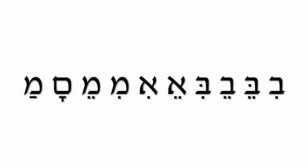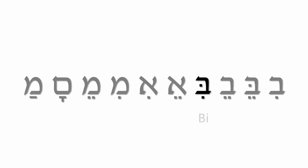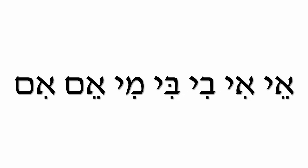So let's practice these letters: 'bay,' 'vay,' 'b,' 'ee,' 'me,' 'may,' 'ma.' Now let's practice some syllables.